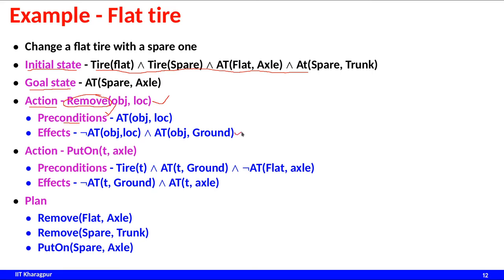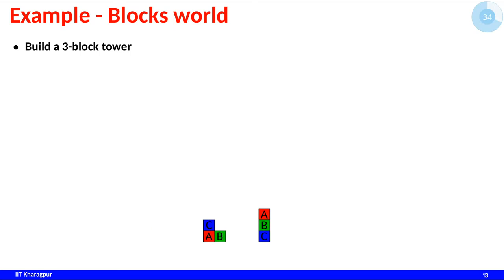Once we apply an action, the state transition or change in state is described through the effects. For a problem like the flat tire, we can remove one of the objects or put something on the axle. Given an initial state, a goal state, and a set of actions, the target is to come up with a plan — a sequence of consecutive actions which, when applied, will reach the desired goal state from the initial state.